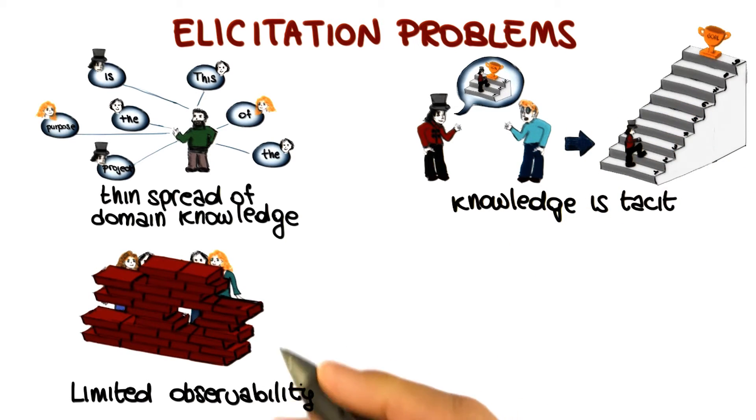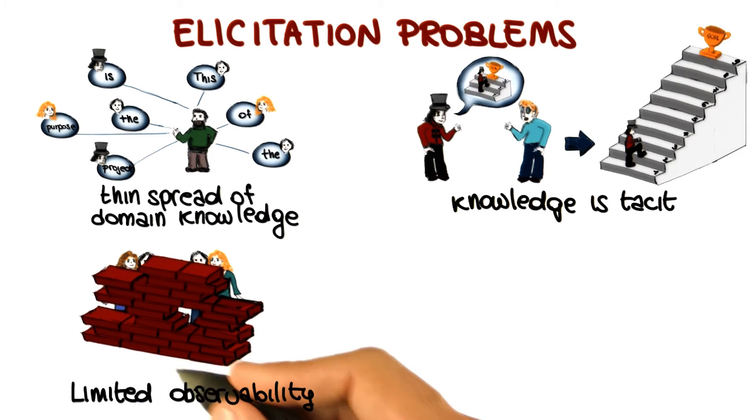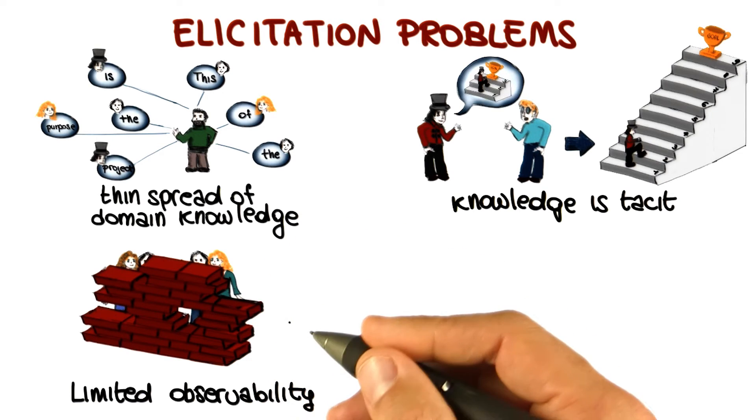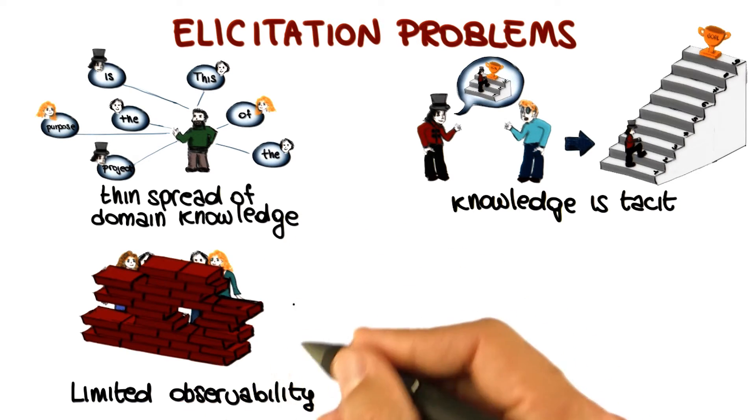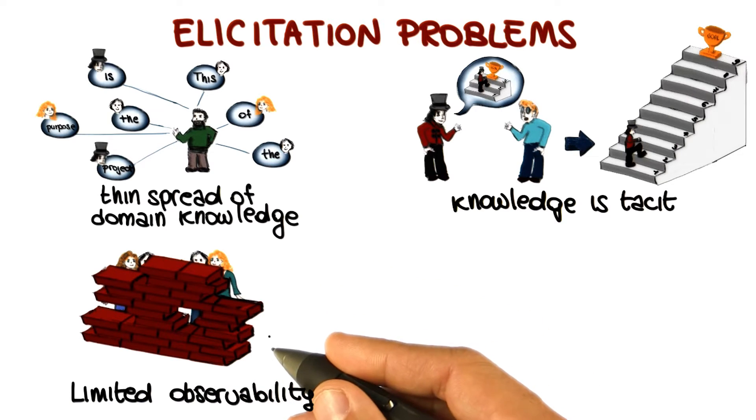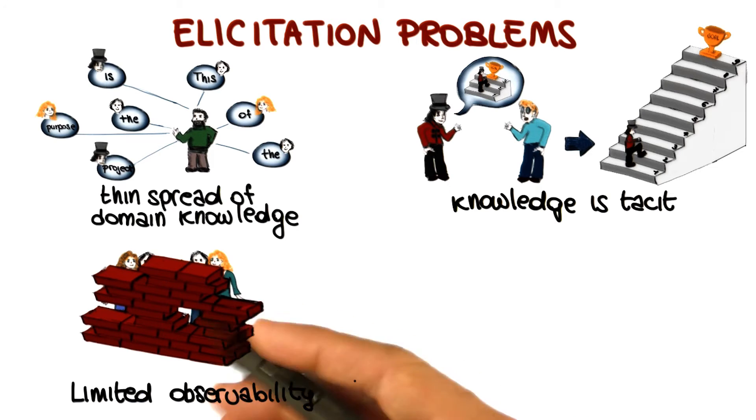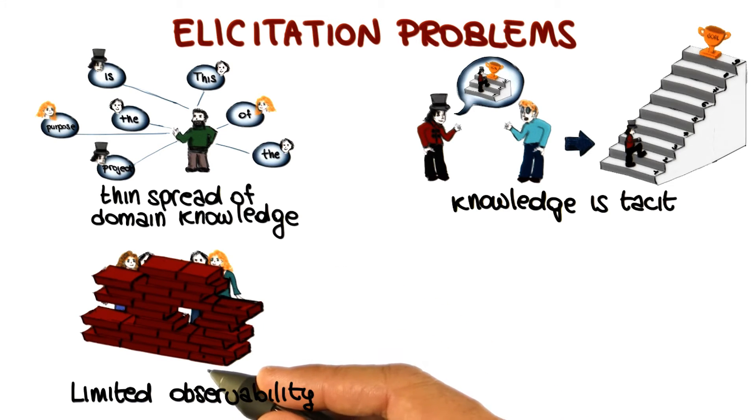Yet another problem is limited observability. Identifying requirements through observation is often difficult, as the problem owners might be too busy to perform the task that we need to observe, or they might be doing a lot of other things together with the task that we need to observe. So that becomes confusing. That introduces noise. Moreover, even when this is not the case, the presence of an observer might change the problem.